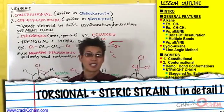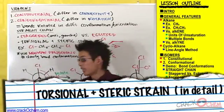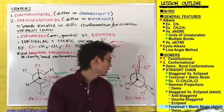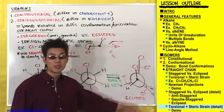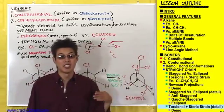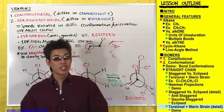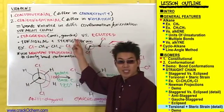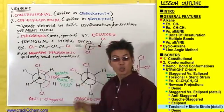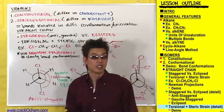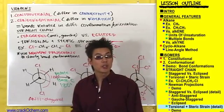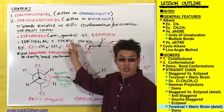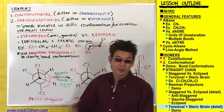Why is anti-staggered the lowest in energy and eclipsed the highest in energy? It's because of the torsional and steric strain mentioned earlier. Let's talk about that now, starting with steric strain first.